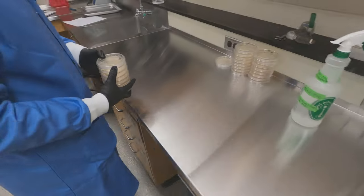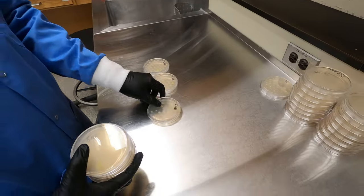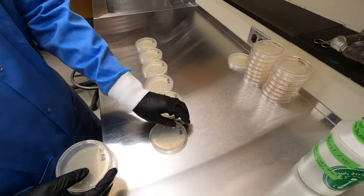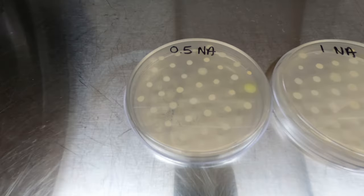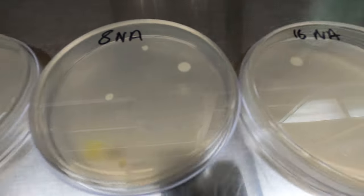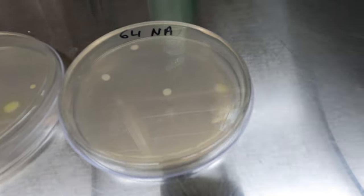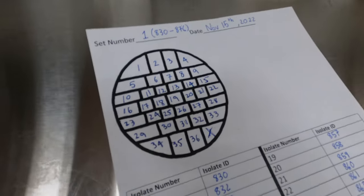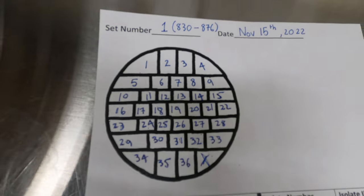We then inspect our plates for growth. What we're looking for is the presence or absence of a colony on each plate at each pin location. Remember, each one of these colonies represents a unique bacterial isolate, and by looking at which concentrations they grow at, we can determine the organism's MIC.